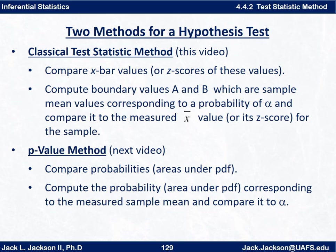The classical test statistic method: we compare x-bar values or their corresponding z-scores, and we compute boundary values A and B which are sample mean values corresponding to a probability of alpha, and compare it to the measured x-bar value or perhaps a z-score. In the p-value method that we'll cover in our next video, we compare probabilities which are areas under the PDF, and we compute the probability corresponding to the measured sample mean and compare it to alpha.